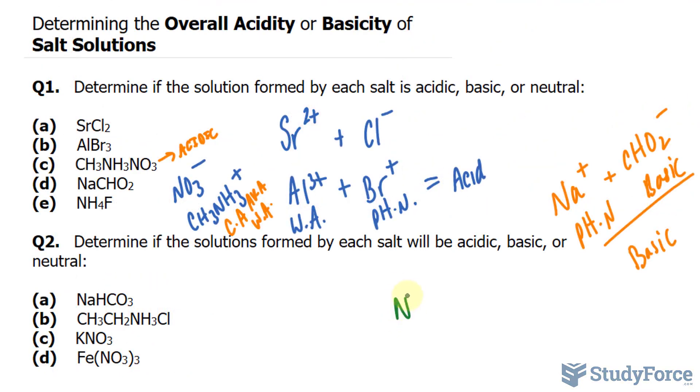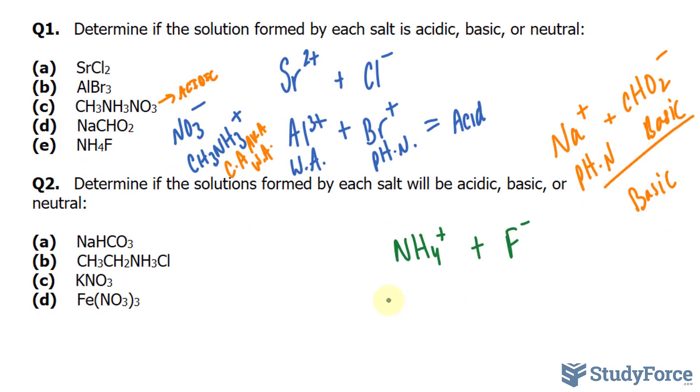Finally, for question E, we have NH4+ and fluorine anions. This, as you can see, has an extra proton. This means that it acts as a conjugate acid now. And so it's a weak acid.